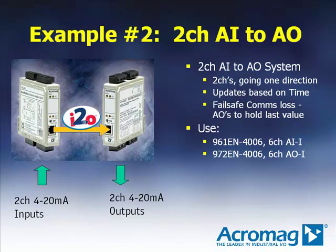In example two, a simple analog I2O system will be illustrated. In this basic system, we'll configure two analog input signals being mirrored to two analog output channels in a remote location. Updates will be based on time, and in the event of communications loss, we'll want the analog outputs to hold their last value indefinitely.